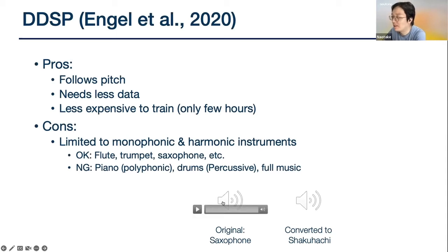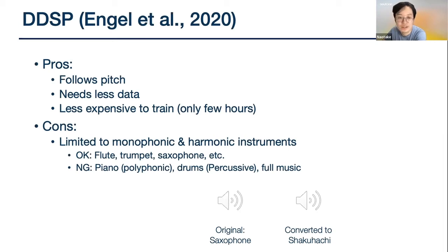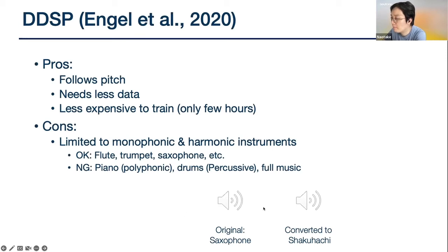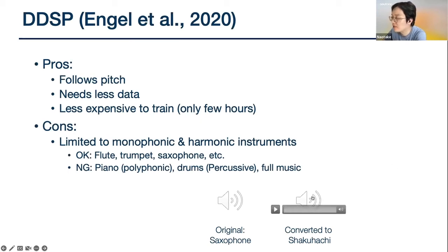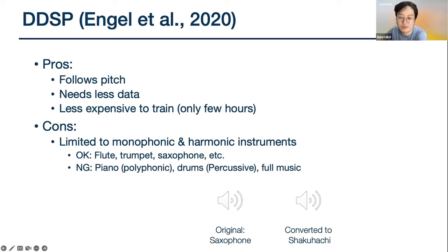Here's an example of a DDSP timbre transfer. We have an original saxophone, and this is how it sounds when converted to a shakuhachi. I think it sounds pretty good. There's some reverb added because the training data had a lot of reverb.